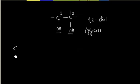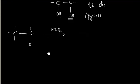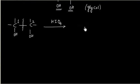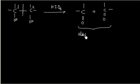When a 1,2-diol or glycol is treated with HIO4 — that is periodic acid — the bond between carbon number 1 and carbon number 2 is broken, and it gives a carbonyl compound, either an aldehyde or a ketone.